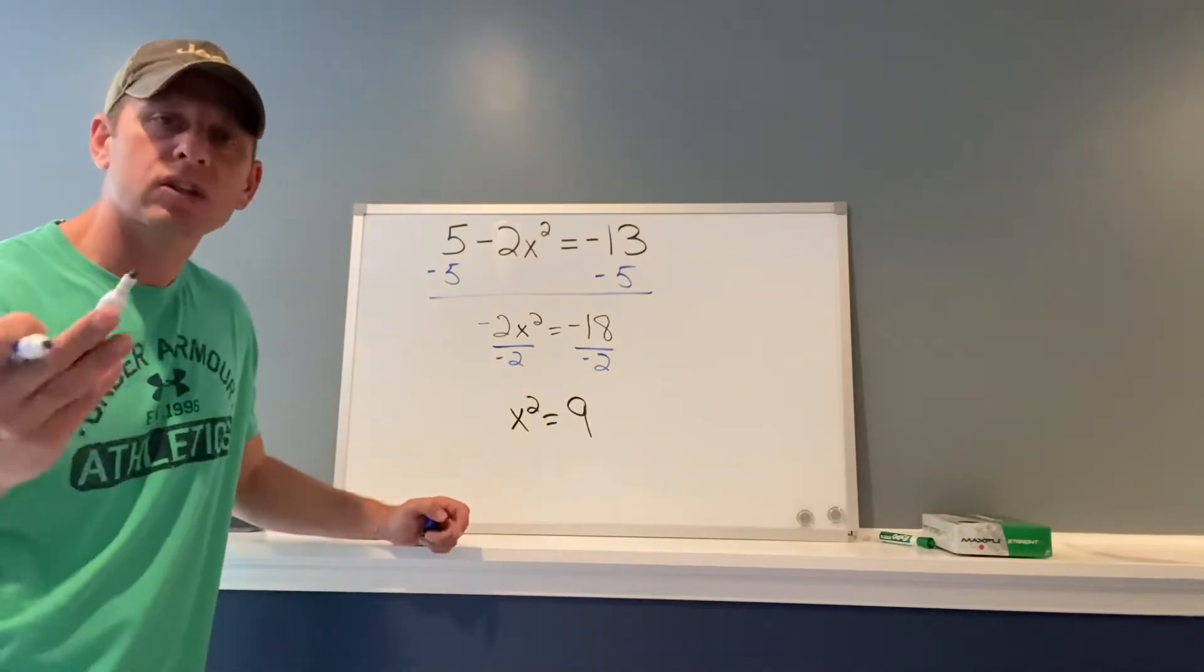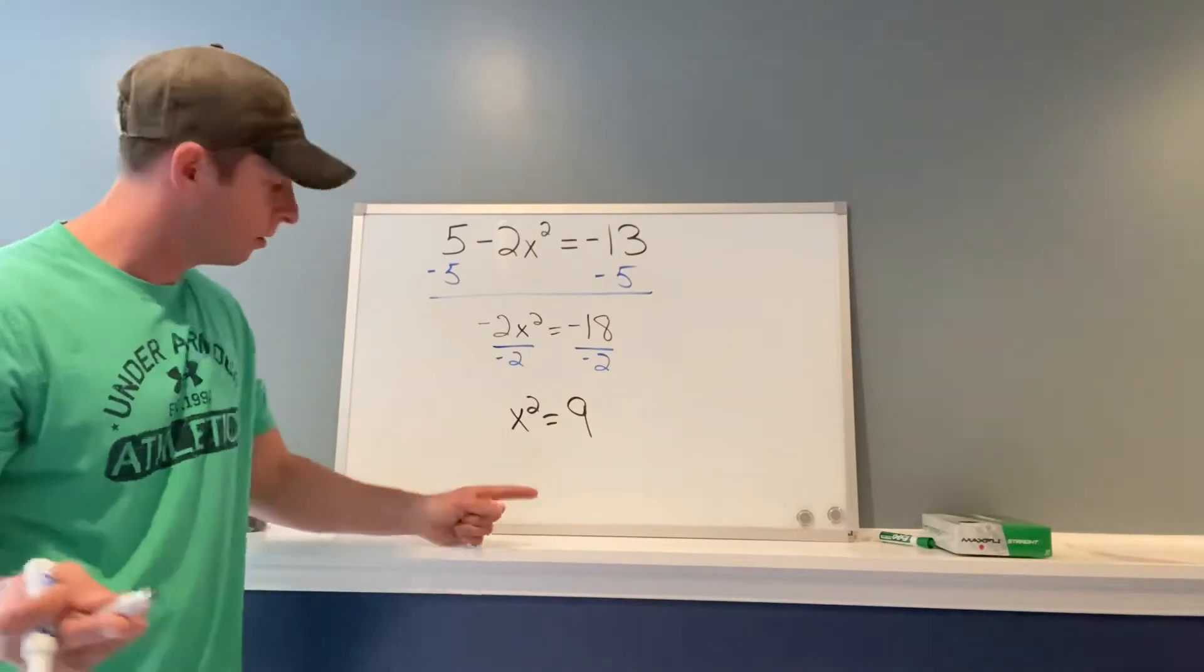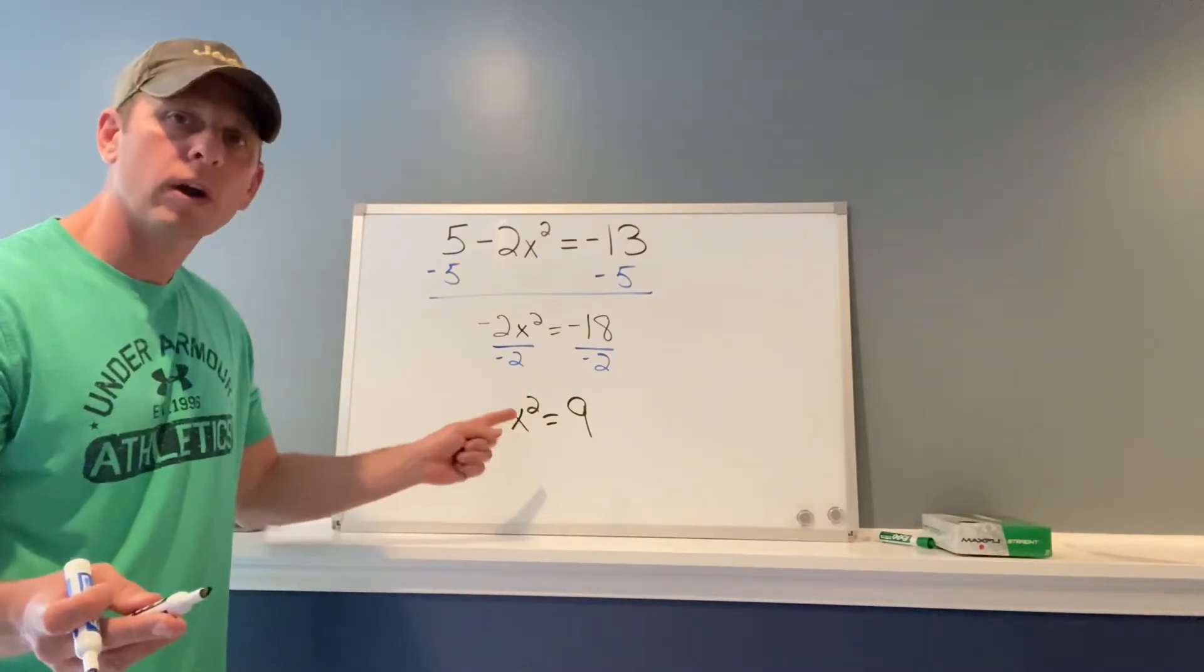Now how did we get rid of the x squared, or how did we get rid of that exponent in the last example? Well, we are solving by taking square roots.